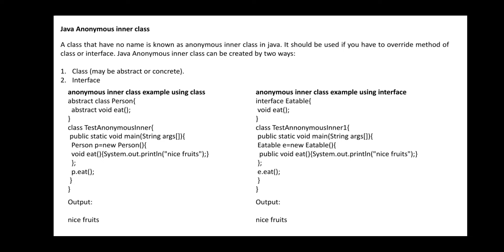Java anonymous inner class means no name is given — a class which does not have any name is called anonymous. For example, an abstract class Person with an abstract method eat(). Here you are not defining a separate inner class; instead, you directly execute the eat() method using: Person p = new Person() { ... }. Outside of this, you call p.eat(). This is called an anonymous inner class — a class with no explicit name, called through the outer class reference.